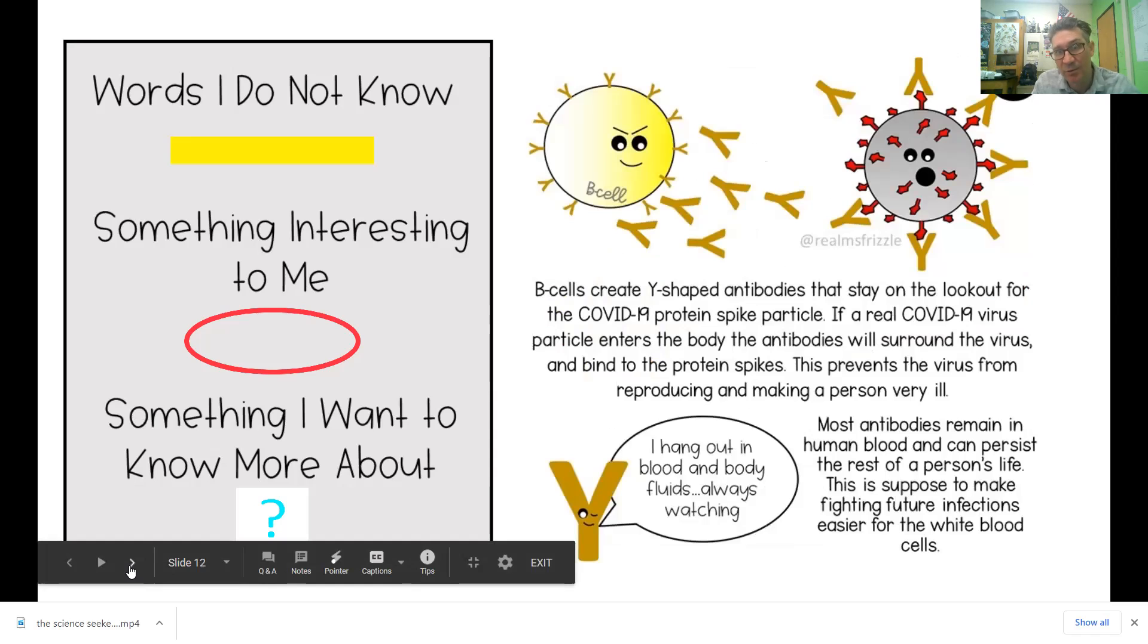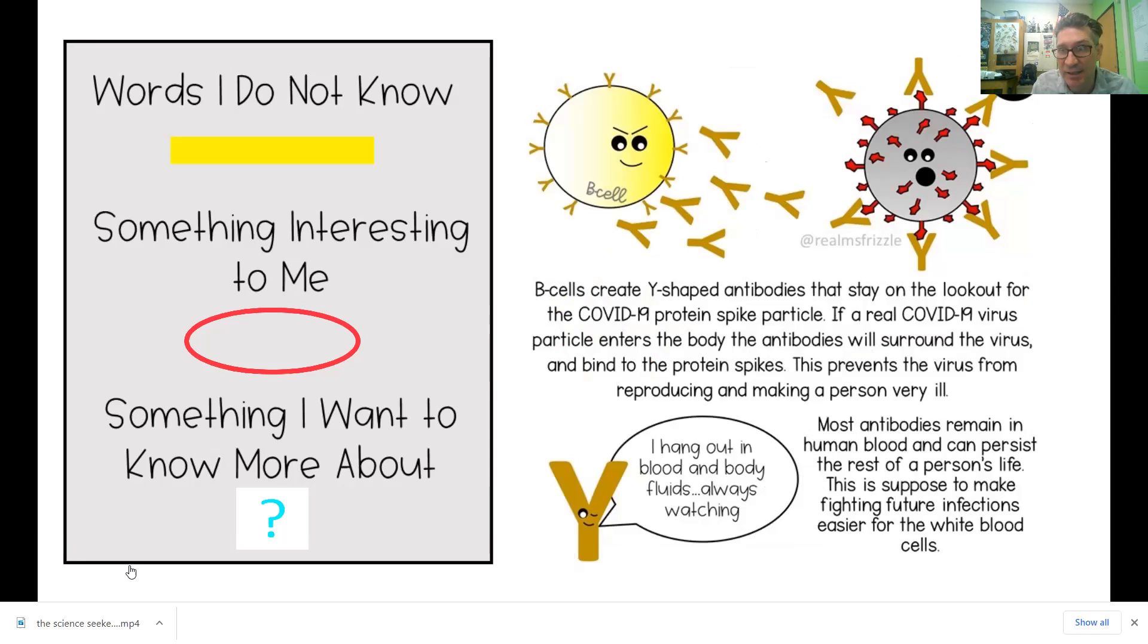They create a Y-shaped antibody that stays on the lookout for the COVID-19 spike particles. If a real COVID-19 virus particle enters the body, the antibodies surround the virus and bind to the protein spike. This prevents that virus from reproducing and making more of itself in your cells.